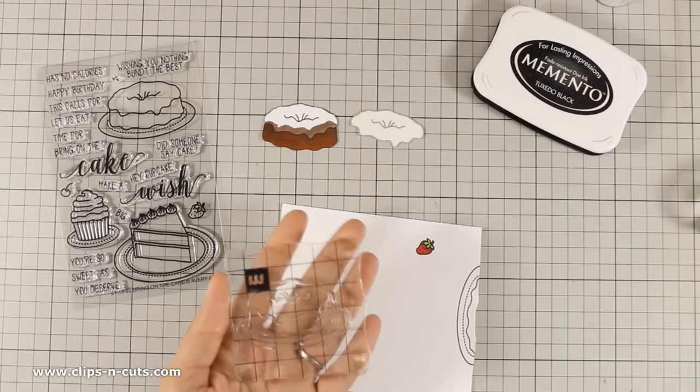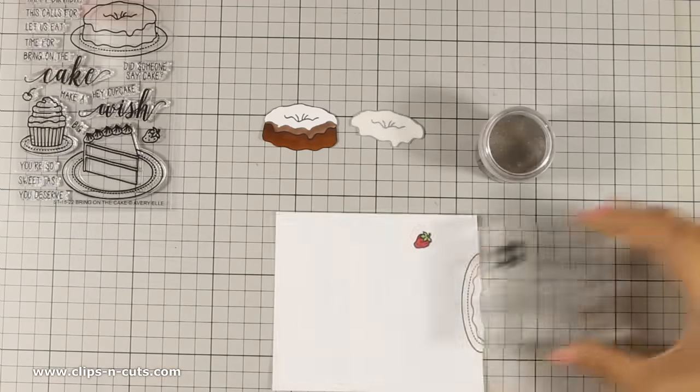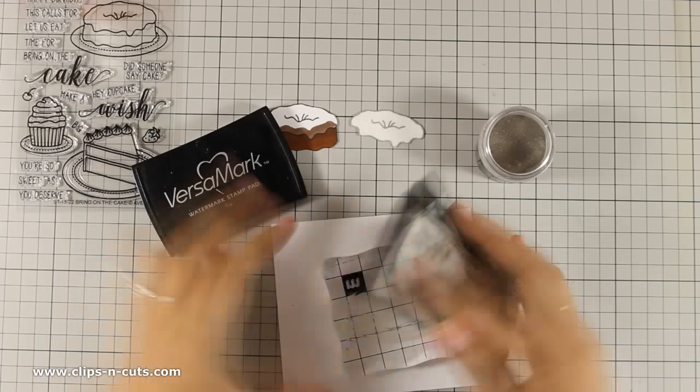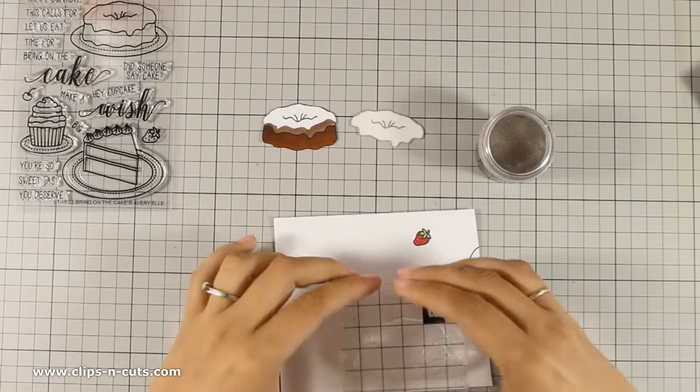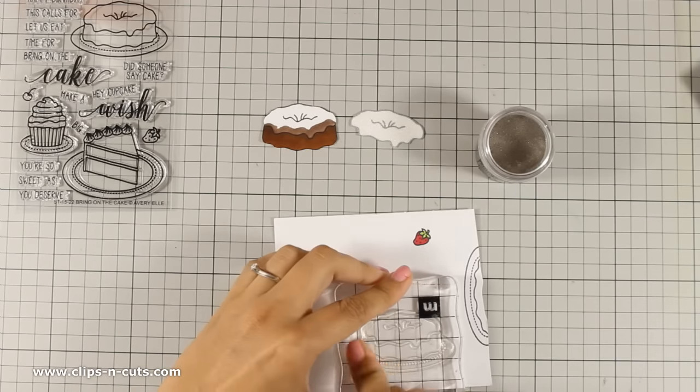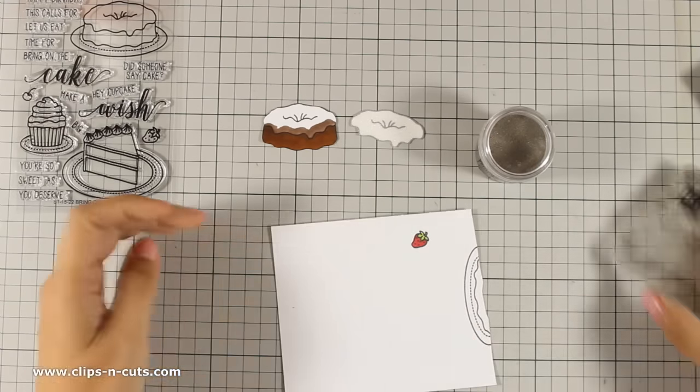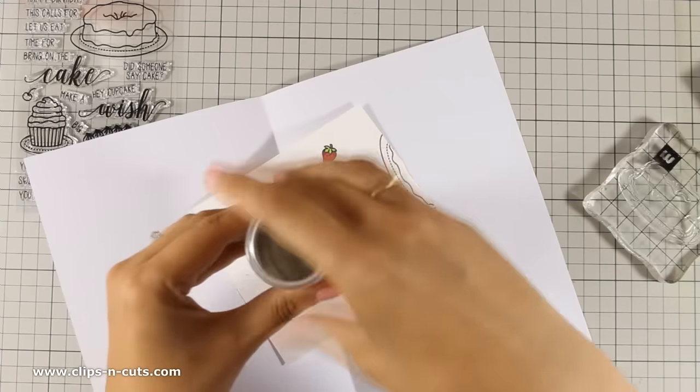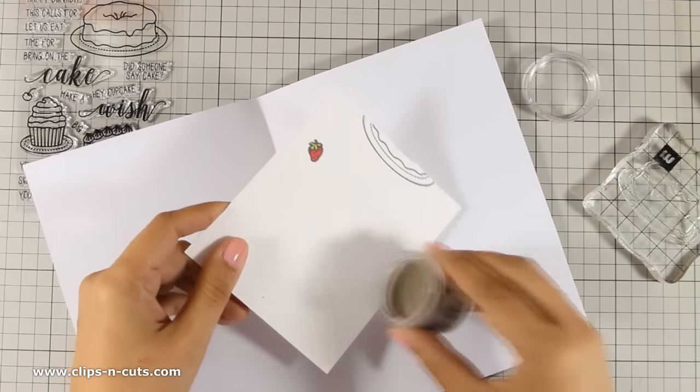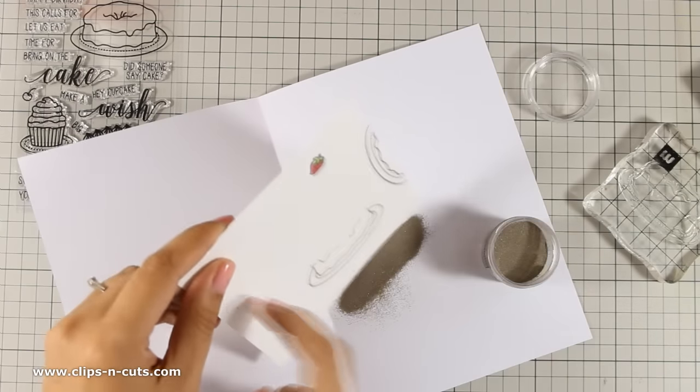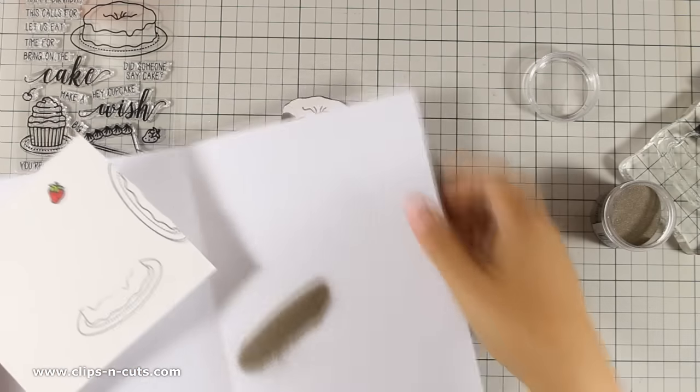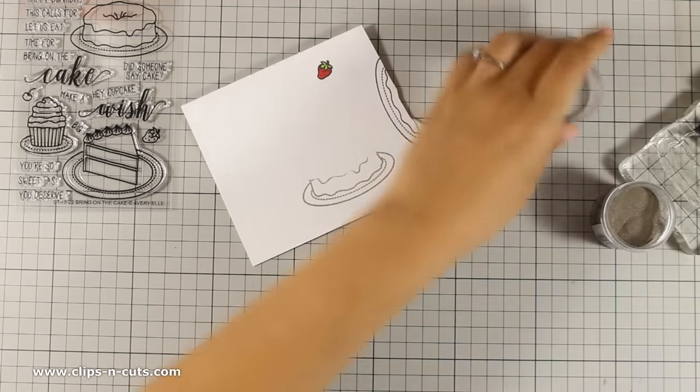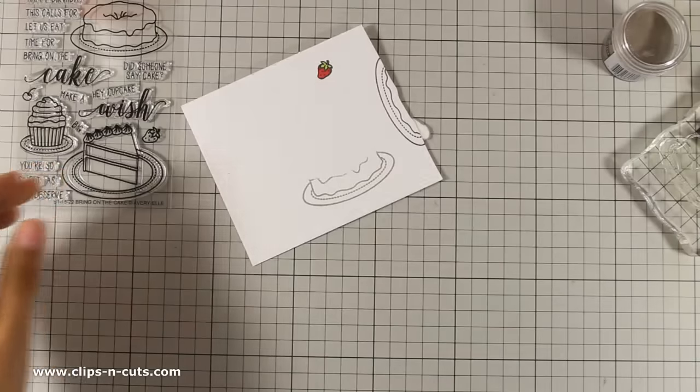Finally I am going to stamp the cake once more and this time I am going to stamp with Versamark because I plan to do some embossing. I am going to be using the platinum embossing powder by Ranger and this is a nice silver embossing powder and that is because I want to have my cake plate in silver. And as you can see I don't bother embossing the whole cake image. I only focus on the dish and that is because I am going to stick all the other parts one on top of the other.